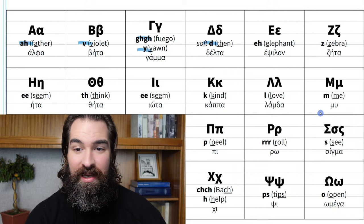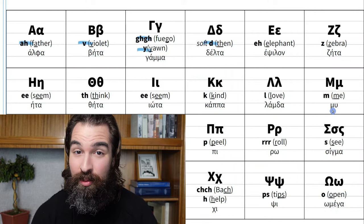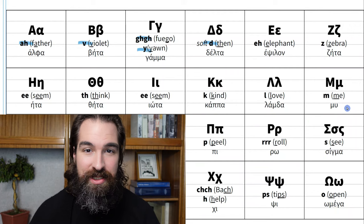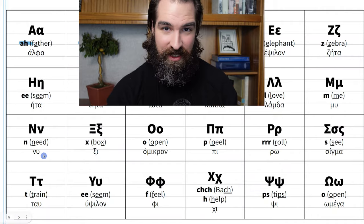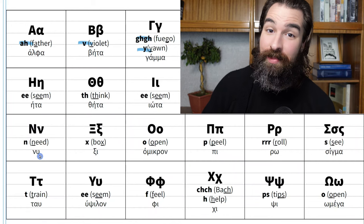Then we have mu. The capital looks like an M, and though somewhat unique in its lowercase, in both cases it makes the M sound. Next we have nu, which looks like a capital N, sounds like an N, but in the lowercase looks like a V — it still sounds like an N, just like in the word 'need.'